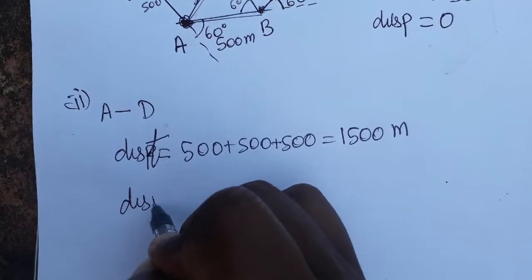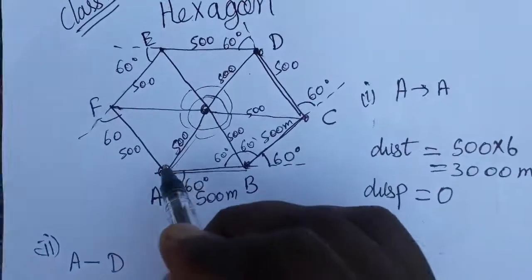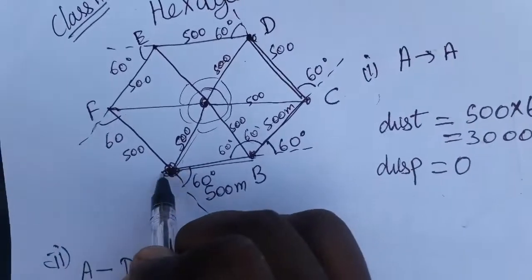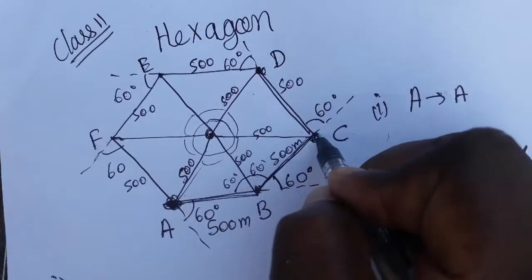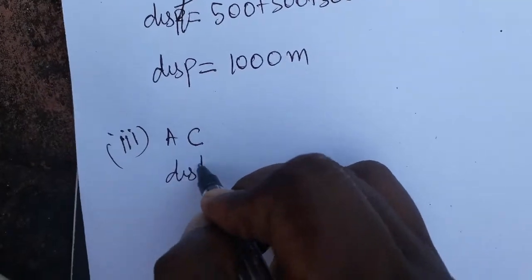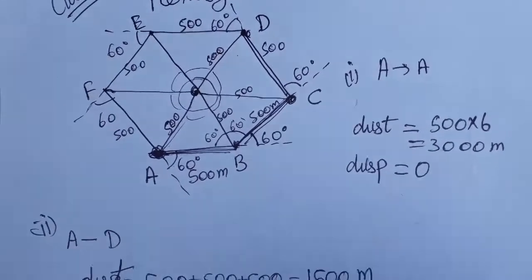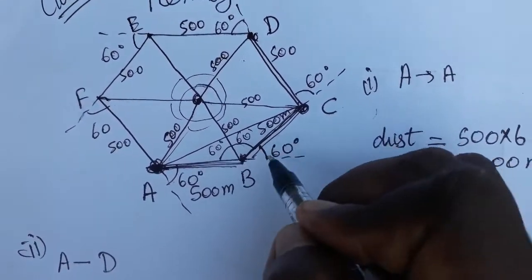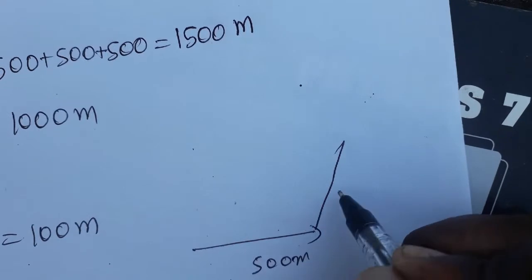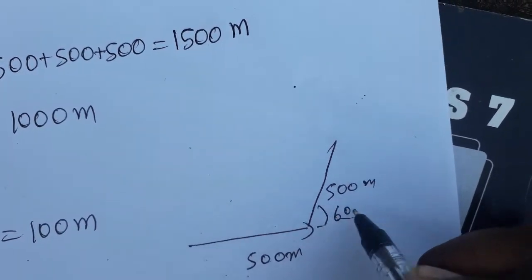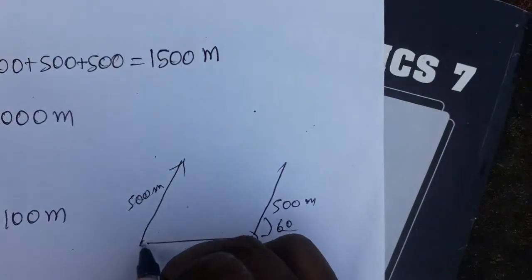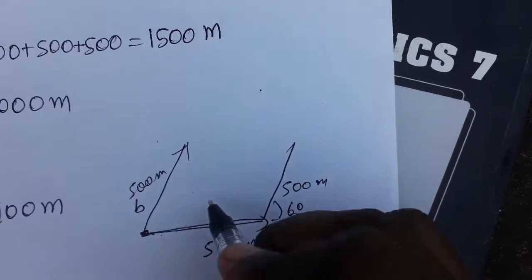So displacement from A to D is 500 + 500 = 1000 meters. Now Case 3 is a bit more complex: the object starts from A, goes to B, and stops at C. Distance is 500 + 500 = 1000 meters. For displacement, I use vectors: vector A is 500 and vector B is 500, with an angle of 60 degrees between them. I place the vectors using the parallelogram method.